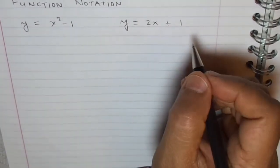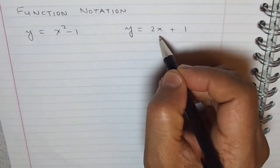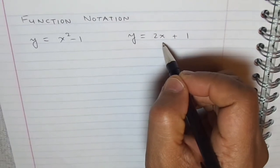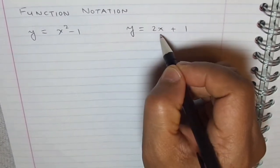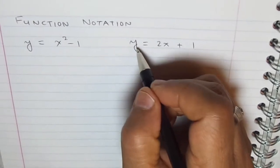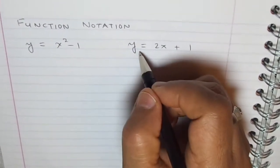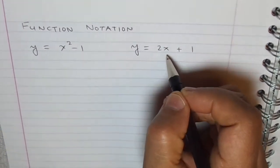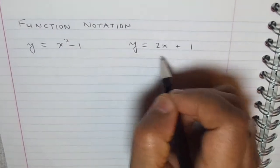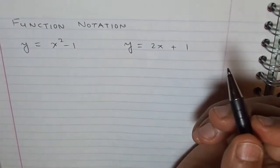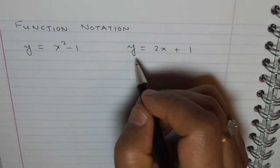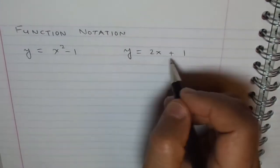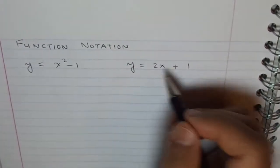As you know, here x is the input independent variable. And for each value of x we get a specific value of y. Since for each value of x you get a unique output, this also represents a function. Now, when it represents a function, we can use function notation to write this equation.